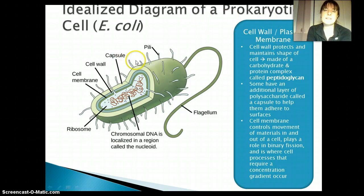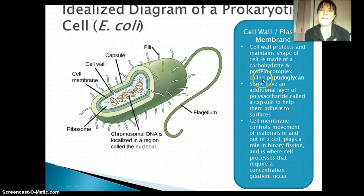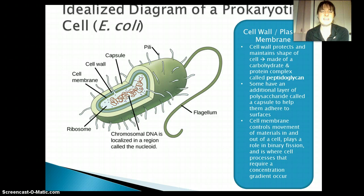The first thing we have is our cell wall and plasma membrane. The cell wall is on the outside; the plasma membrane is the next one in. The cell wall helps protect shape and makes the cell more solid. In bacteria, it's made of a carbohydrate and protein complex called peptidoglycan. Some of them also have an additional outer layer of sticky material — that's the capsule — which allows some prokaryotic cells to stick to different places. That's actually why you have to brush your teeth — that capsule gets bacteria stuck there.